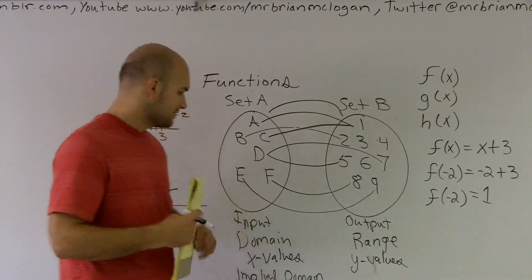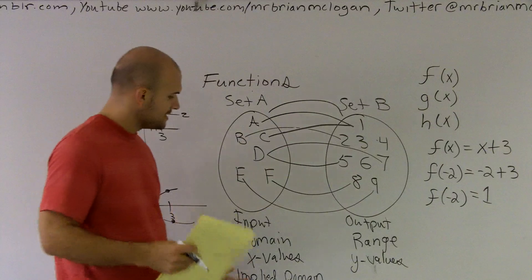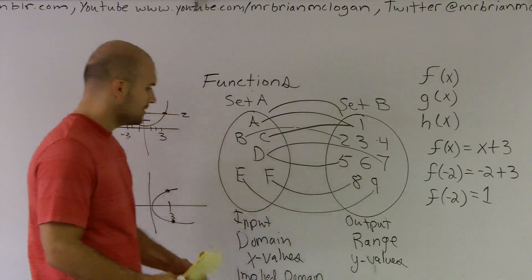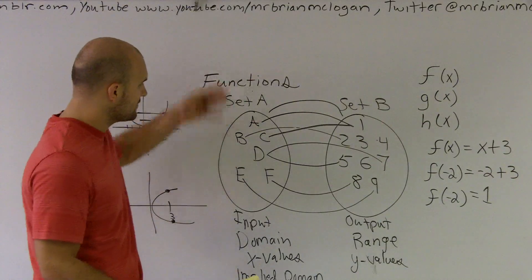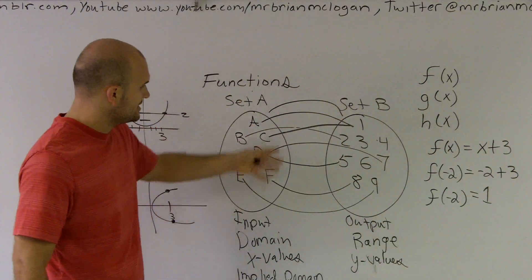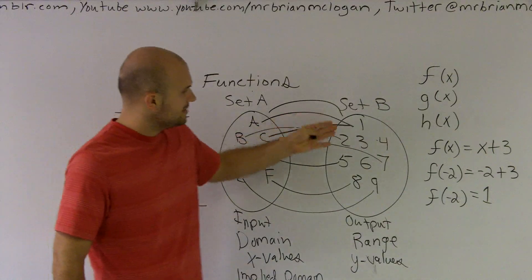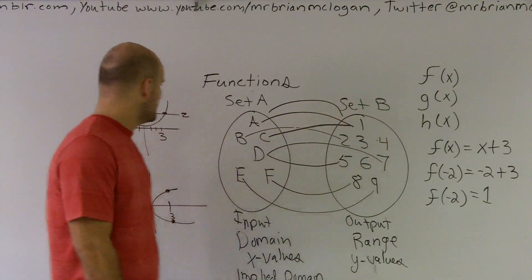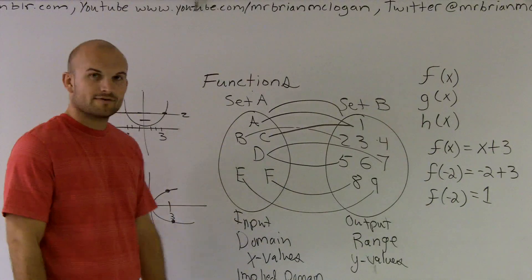To remind you, the implied domain is where all the x values are true for a graph. However, for the domain of this function relationship, my domain is all the elements in this set, and the range is all the elements in this set. That's an overview of functions.